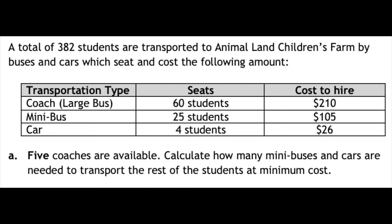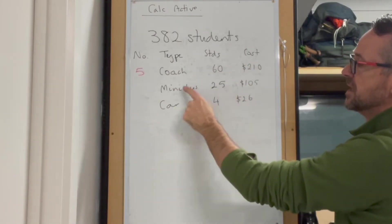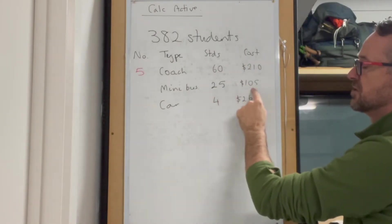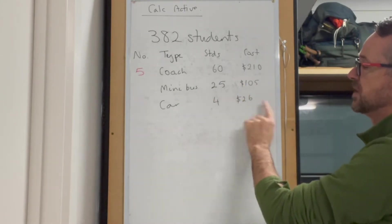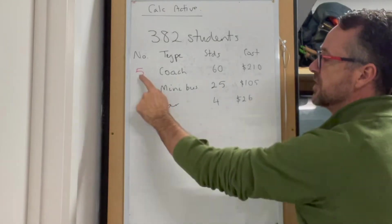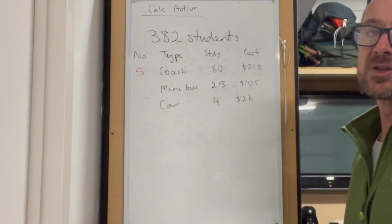Question 1 looks at moving students with buses, minibuses, and cars. A coach moves 60 students at a cost of $210, a minibus moves 25 students at $105, and a car moves 4 students at $26. We're told there are 5 coaches available.